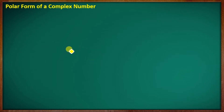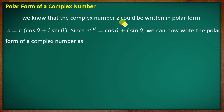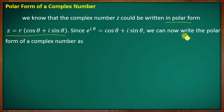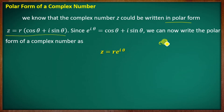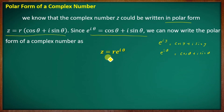At the polar form of a complex number, we know that a complex number z can be written in polar form as z equal to r into cos θ plus i sin θ. Since e raised to iθ equals cos θ plus i sin θ, we can rewrite the polar form of a complex number as z equal to r into e raised to iθ. So when we say e raised to iy, we are using cos y plus i sin y.